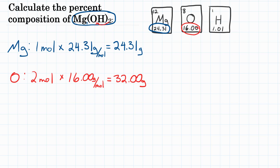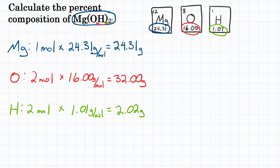For hydrogen, our third and final element, we have 2 times 1 hydrogens, or 2 moles of hydrogen. We're going to multiply that by the molar mass of hydrogen, 1.01, and get 2.02 grams. All of our moles cancel out, so we're just going to be left with grams.